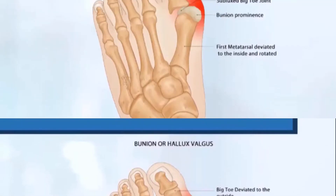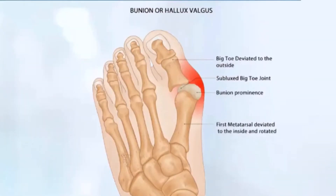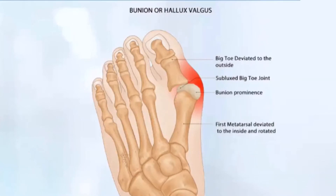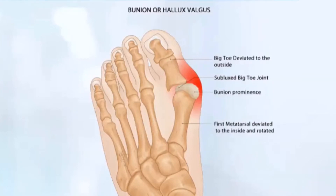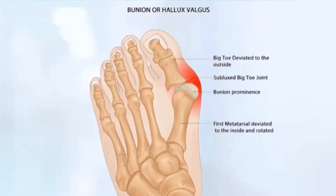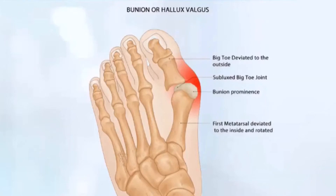As you can see in the annotation, the first metatarsal is deviated and angulated. This can occur as early as age three, four, or five, where the beginning stages of a bunion can present themselves. That is ultimately the first sign of a potential bunion.